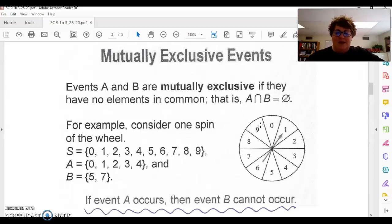And that's what it means to be mutually exclusive. If I spin on one spin, a 0, 1, 2, 3, or 4, that guarantees that I'm not spinning a 5 or a 7. So that's what it means, again, to be mutually exclusive.